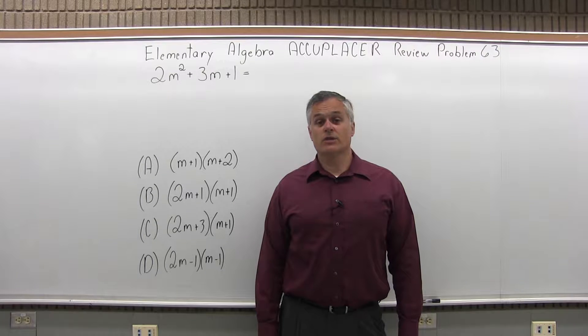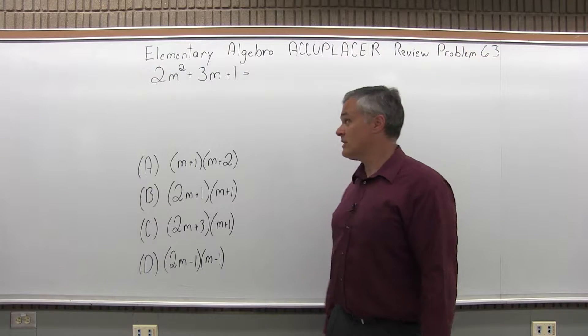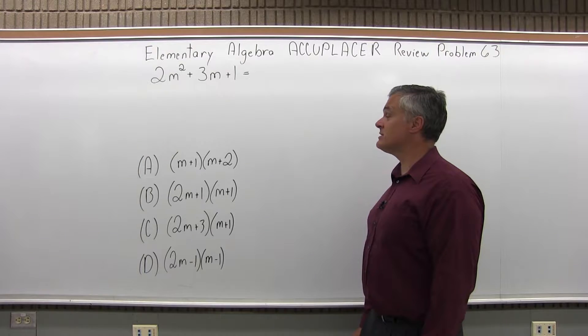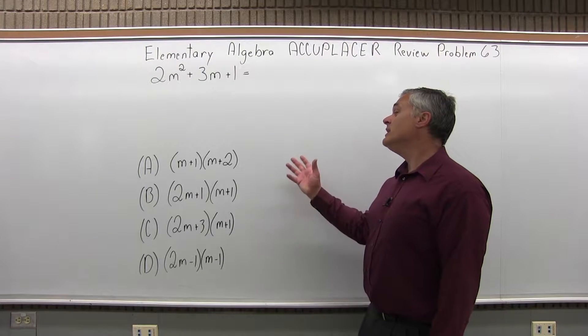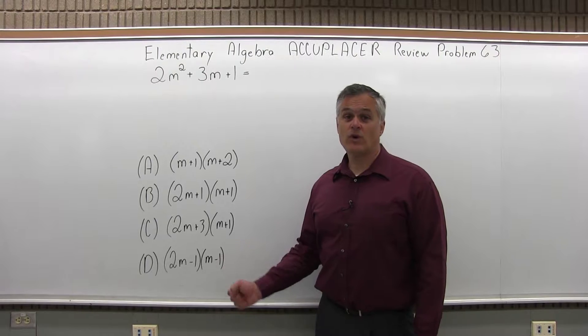This is the Elementary Algebra Accuplacer Review, Problem 63. We have 2m² + 3m + 1 equals which one of the given four options?